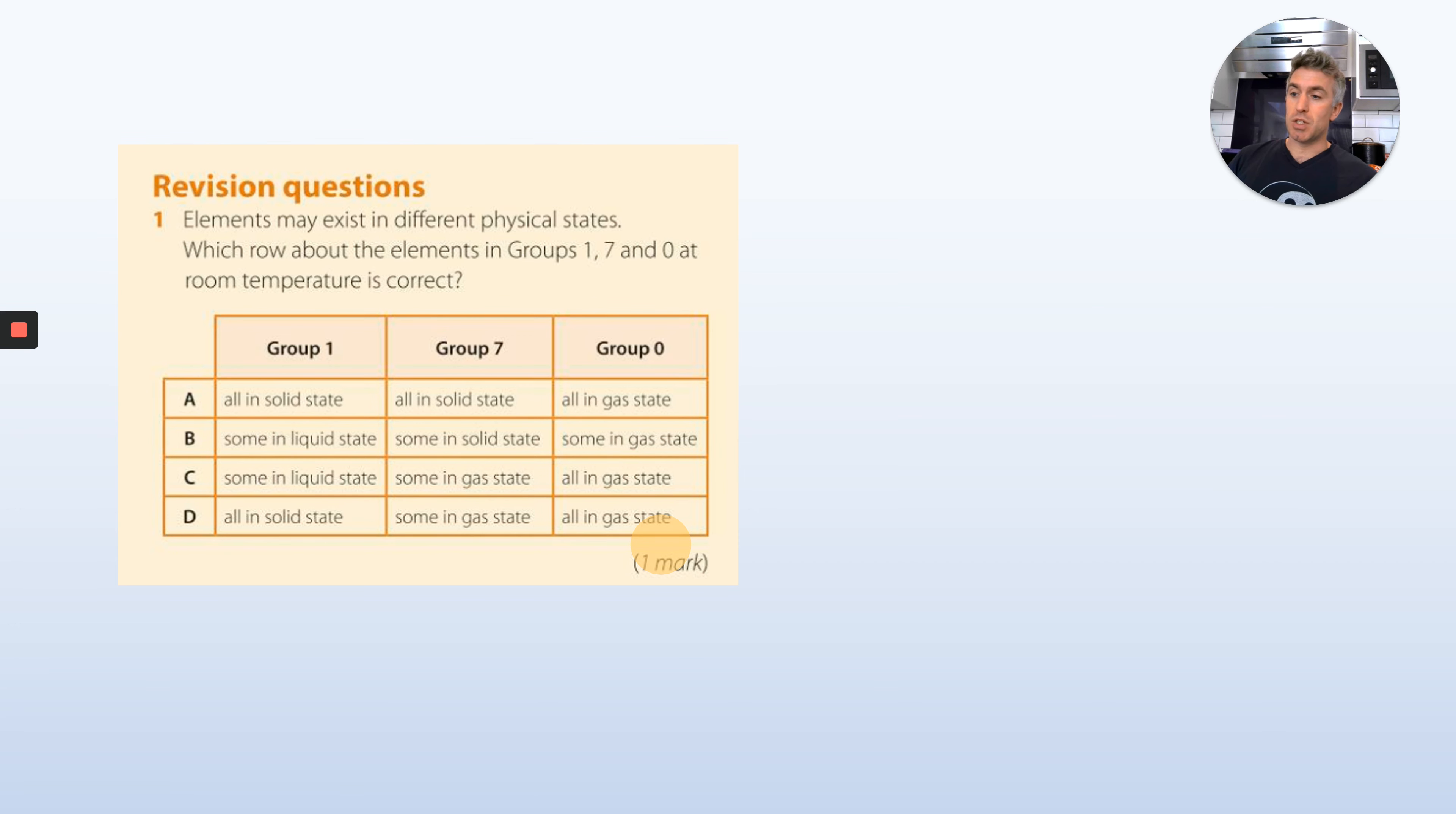Question one of the revision section. Elements may exist in different physical states. Which row about Group 1, 0, and 7 is correct? So you just write 1A, 1B, 1C, or 1D. A, Group 1 are all solid, Group 7 all solid, and Group 0 all gas. B, Group 1 some in liquid, some in solid, some in gas. C, some in liquid, some in gas, all in gas. Or D, all in solid, some in gas, and all in gas. You just have to pick the correct one. For example, you know that Group 7 has solid, liquid, and gas. So hint, A is wrong because you can't have chlorine and fluorine in solid at room temperature. Use that information.